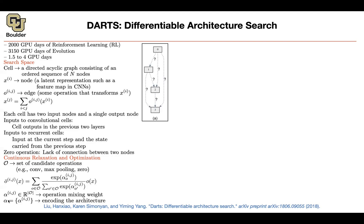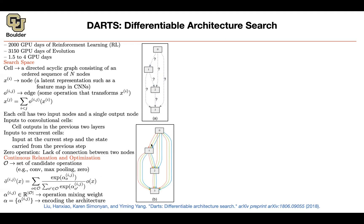Your architecture is now the choice of alpha. Alpha is a continuous variable — a continuous vector — that you can optimize over using gradient descent. This is the key insight: instead of choosing one operation, do all of them and put weights on them. You end up with a bi-level optimization problem. In the lower level, you look at your loss on the training data and optimize over the weights omega of your neural network — the weights of your convolutions, max pooling, zero operations, and separable convolutions. This is very similar to the idea of weight sharing for child networks.